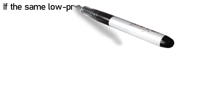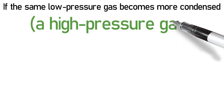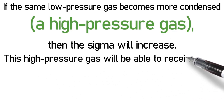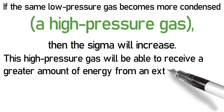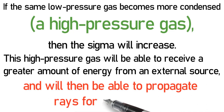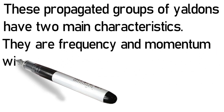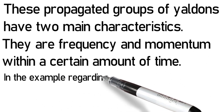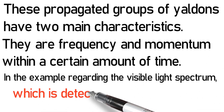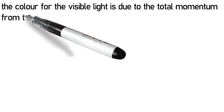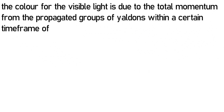Gases under low pressure won't be able to emit a wide range of propagated rays and will be limited to propagate rays at a certain natural frequency according to equation 2-2. If the same low pressure gas becomes more condensed into a high pressure gas, then the sigma will increase, and this high pressure gas will be able to receive a greater amount of energy from an external source and will then be able to propagate rays for a wide range. These propagated groups of Yaldins have two main characteristics: frequency and momentum within a certain amount of time.